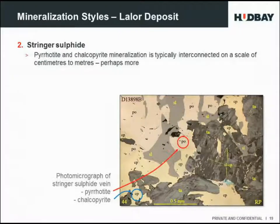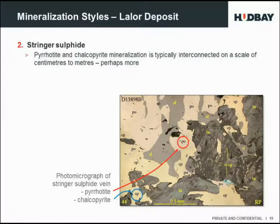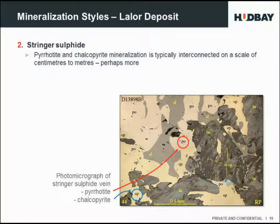Here we have a photomicrograph of Stringer zone type sulphide — we're not seeing euhedral pyrite, but we can see the interconnected chalcopyrite and pyrrhotite mineralisation. These stringers, when seen in drill core or in faces underground, appear to be interconnected and continuous.